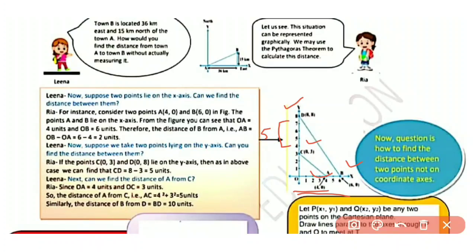Can we find the distance from A to C? Yes, we can. Since OA is 4 units and OC is 3 units, the distance AC can be found using the Pythagoras theorem: base squared plus perpendicular squared. So 4 squared plus 3 squared = 16 plus 9 = under root 25 = 5 units. Similarly, distance from B to D is 10 units, found using the Pythagoras theorem.